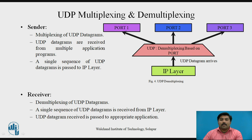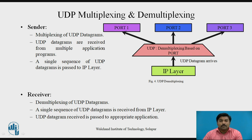Now let's see the services provided by UDP in the form of multiplexing and demultiplexing. At the sender side, multiplexing of UDP datagrams is done — there are many applications running, each identified by an assigned port number. UDP takes data from each application, multiplexes them together, and sends them to the appropriate application on the receiver side. At the receiver side, demultiplexing is done — a single sequence of UDP datagrams is received from the IP layer and passed to the appropriate application using the port number.